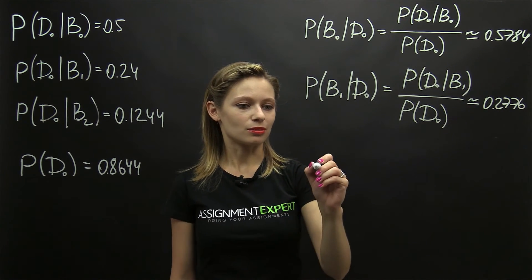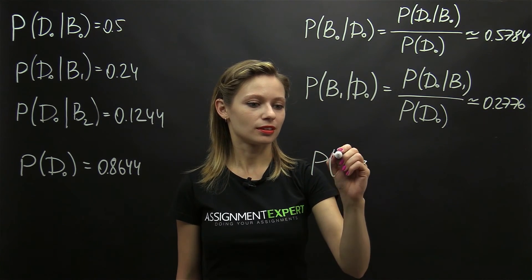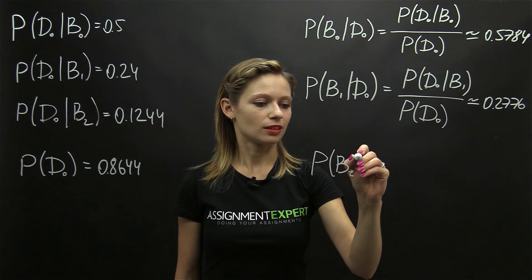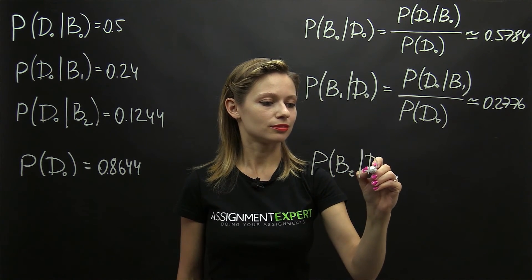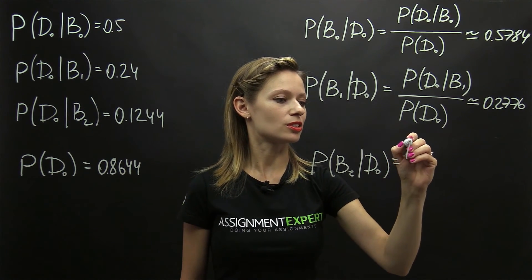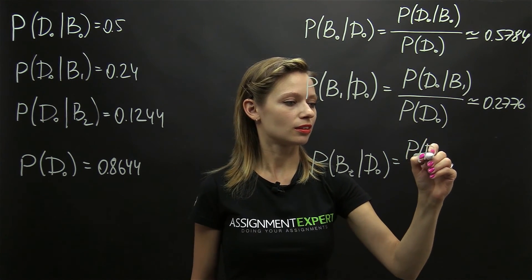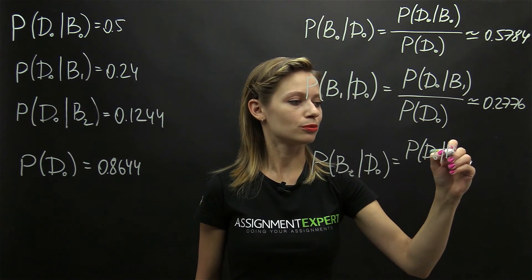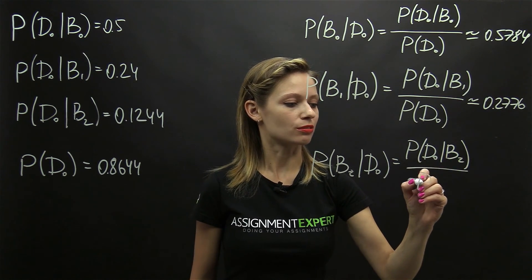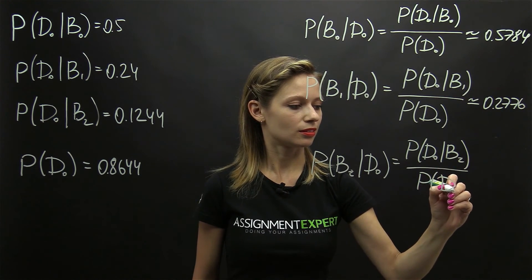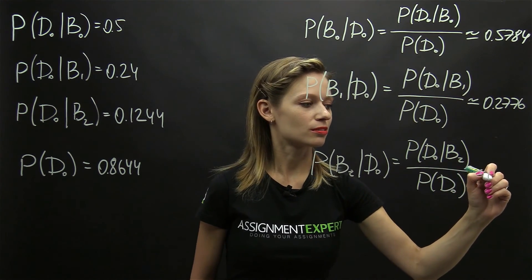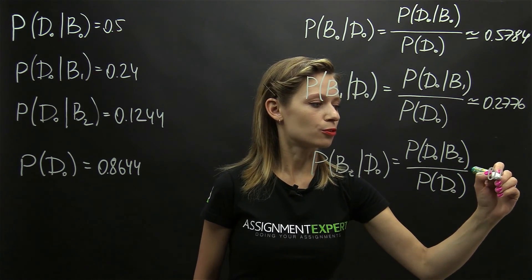And then the probability of B2 given D0 is equal to the probability of D0 given B2, over the probability of D0, and that is approximately equal to 0.1440.